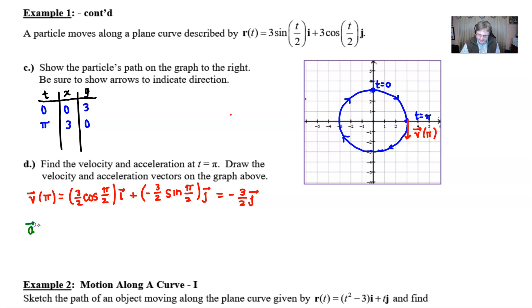Next we move on to the acceleration at time π. From part B we had an acceleration expression that was negative three fourths times the sine of t over 2. We're going to replace t with π and we had negative three fourths cosine of t over 2 which in this case would be π over 2. In the evaluation here we have negative three fourths times 1 which is negative three fourths i, and then negative three fourths times the cosine of π over 2 which is zero, so the j component disappears.